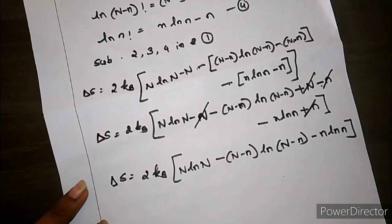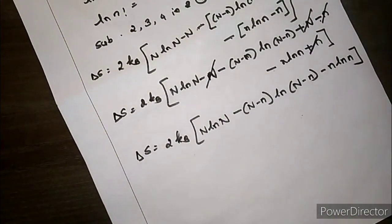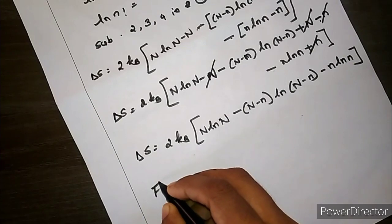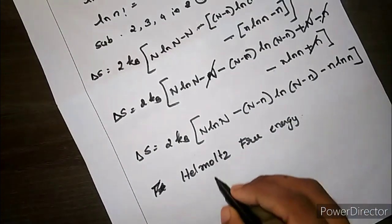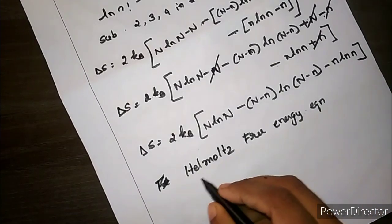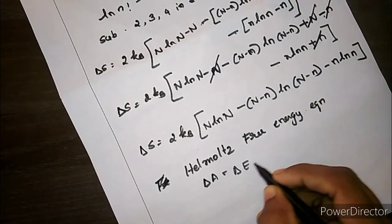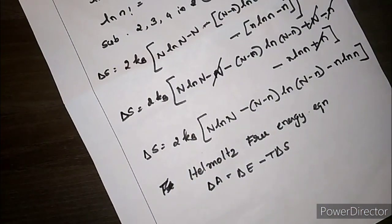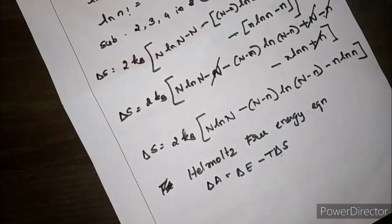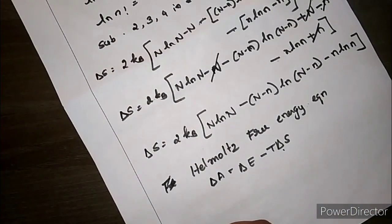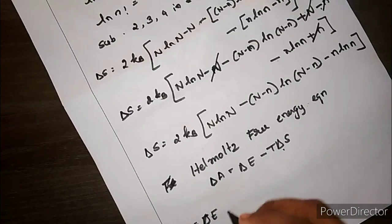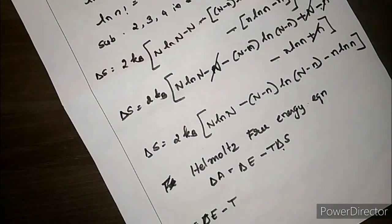Before differentiating, we use the Helmholtz free energy equation: ΔA = ΔE − T·ΔS. Substituting the expression for ΔS: ΔA = ΔE − T · 2kB · [N·ln(N) − (N−n)·ln(N−n) − n·ln(n)]. Here ΔE = Ns·Es, where Ns is the number of Schottky defects and Es is the energy required to create each defect.